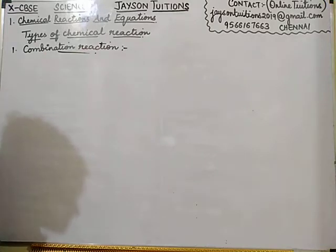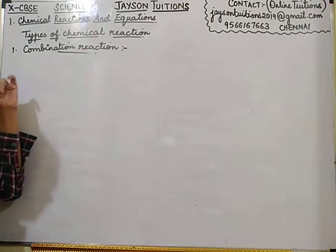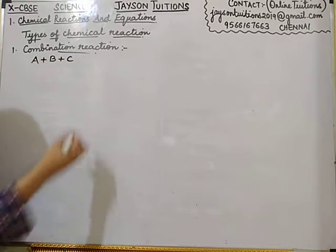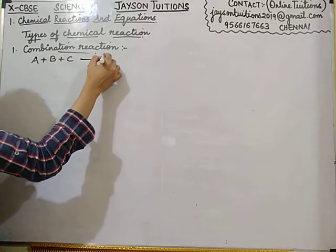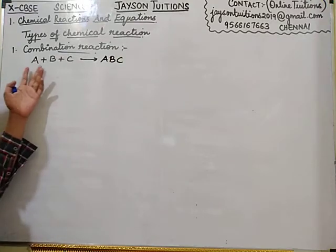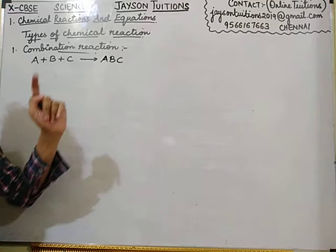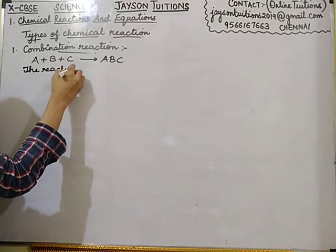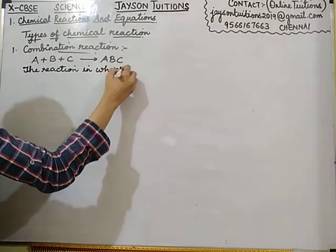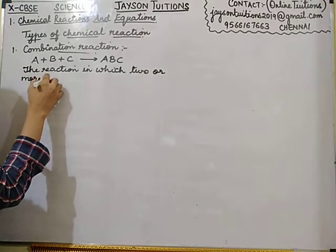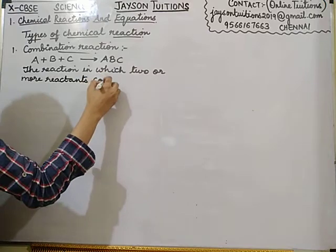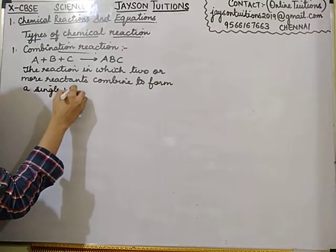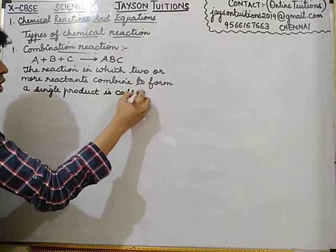What is meant by combination reaction? As the name says, it is combination. For example, if I take A, B, C — two or more reactants — they will combine. They will undergo combination and they will form only one product. So, two or more reactants combining together to form a single product is called a combination reaction.